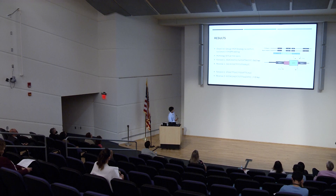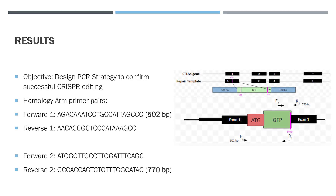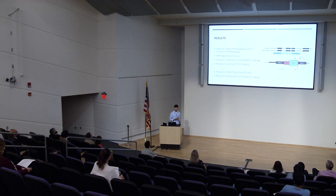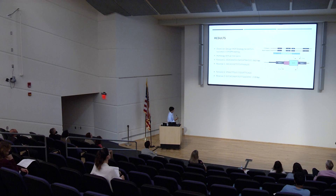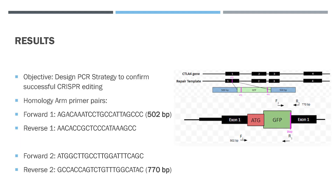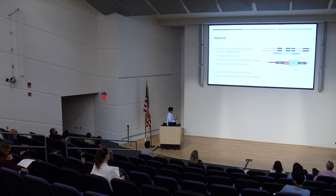I also used Horizon to design a PCR strategy to confirm successful CRISPR editing. Using CRISPR, we obtained primer pairs — forward one and reverse one, and forward two and reverse two. After the experiment, we check using the primer pairs: forward one and reverse one should be 502 base pairs long, and forward two and reverse two should be 770 base pairs long. These results would need to be consistent with experimental results to confirm that the editing was successful.